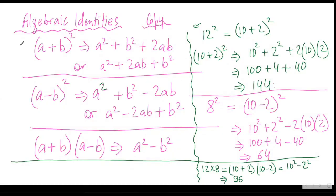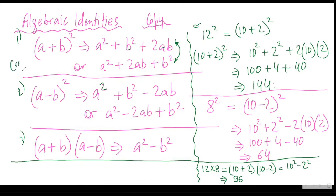So Mr. Satya, have you understood these three identities? Yes. The first identity is: you need to memorize that (a + b)² is equal to a² + b² + 2ab. You can write it like this or like this — both are okay, whatever your teacher says. The second is: (a - b)² is equal to a² + b² - 2ab. You need to memorize these results.